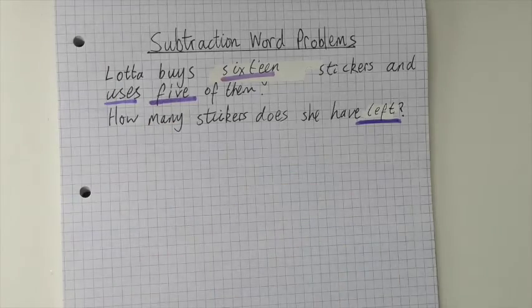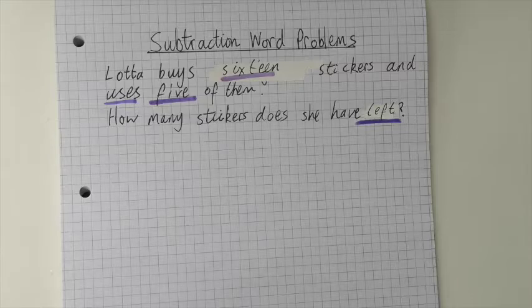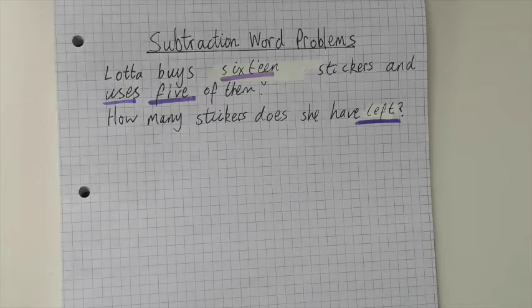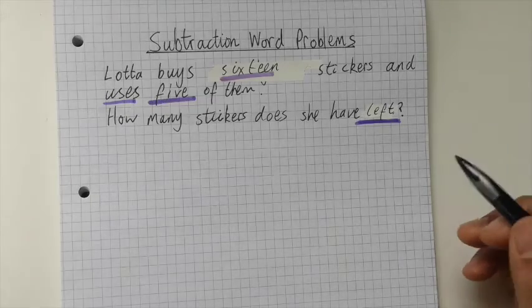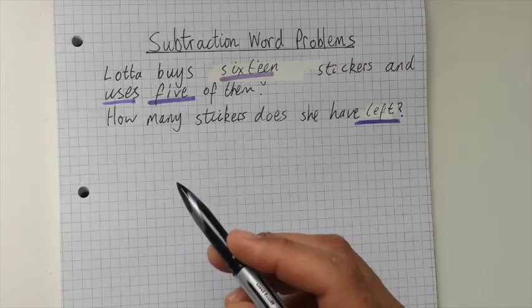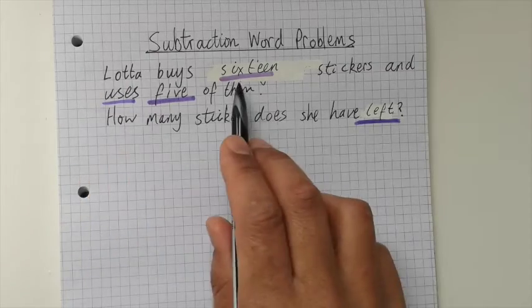So now we know we're using subtraction, and you know how to do subtraction because we've worked on that in the last few weeks. We're going to use our deans. First thing we can do is write our number sentence. How many stickers did Lotta have to begin with? She had 16.